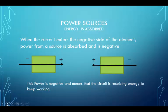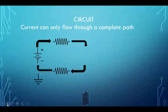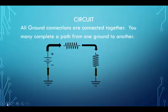The power is negative. For example, with a voltage supply, current goes into the negative terminal and out of the positive terminal. With a current source, the current goes into the plane end of the arrow and out of the arrowhead end of the arrow. This means that the power is negative and means that the circuit is receiving energy to continue its work in other areas. Current can only flow through a complete path. A circuit with a ground is actually a connected circuit. Since all ground terminals are connected together, you may complete a path from one ground to another and consider that a complete circuit.